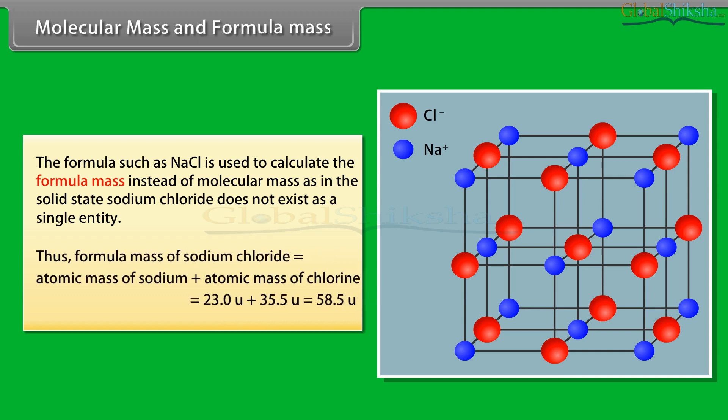Thus, the formula mass of sodium chloride equals the atomic mass of sodium plus the atomic mass of chlorine, which is 23.0u plus 35.5u, equal to 58.5u.